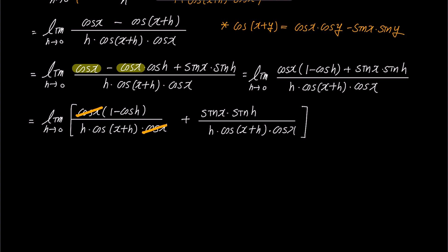By putting the brackets and expanding the limits, we could write it as the limit of 1 minus cosine h over h times 1 over cosine x plus h, and the limit of sine h over h times sine x over cosine x plus h times cosine x.